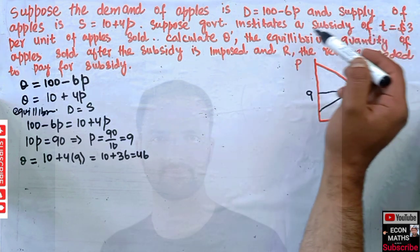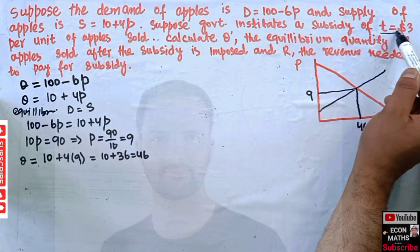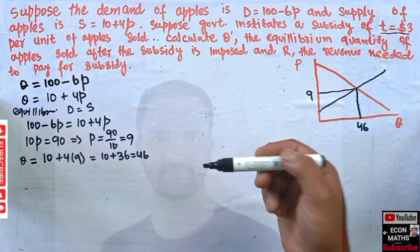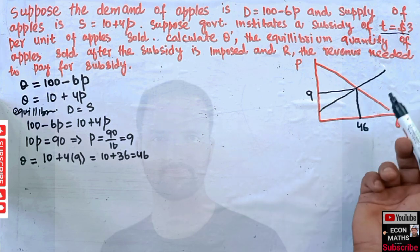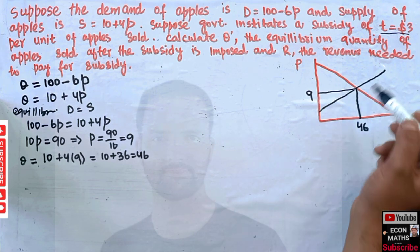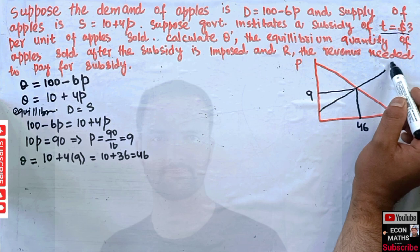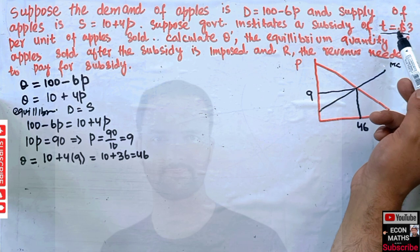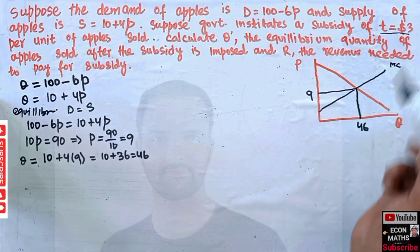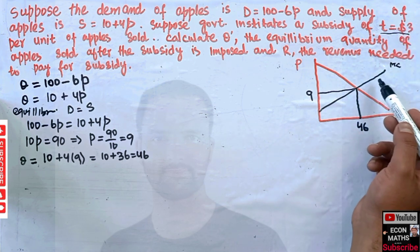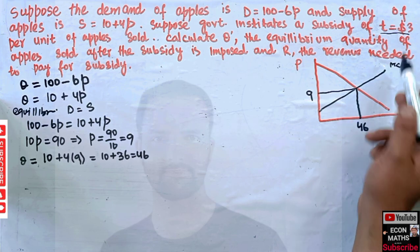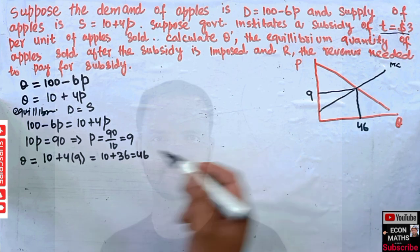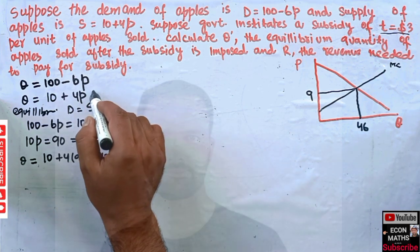The question tells us there is a subsidy of T = $3 per unit sold. Imposition of the subsidy will shift our supply curve to the right. Since the supply curve is also our marginal cost curve, a subsidy of $3 per unit means the marginal cost of production decreases by $3.